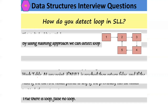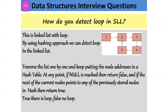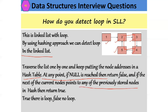How do you detect a loop in a single linked list? A loop exists when a node's next pointer points back to a previously visited node — for example, node 5 pointing back to node 2 creates a loop. To detect a loop using the hashing approach: traverse the list one by one and keep storing node addresses in a hash table. If null is reached, return false (no loop). If the next pointer of the current node points to any previously stored node address, the hash returns true — meaning there is a loop.